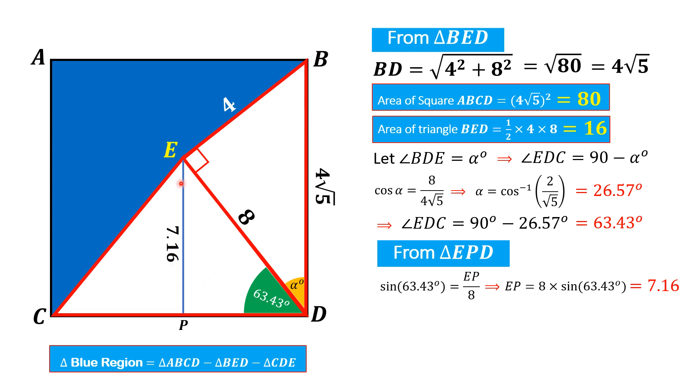Now we can find the area of triangle CED very easily. Its perpendicular is 7.16 units and its base is the side of the square, that is 4 times square root of 5. So area of triangle CED equals half times 4 times square root of 5 times 7.16, and that equals 32.02 square units.